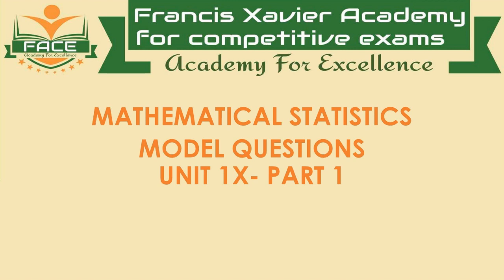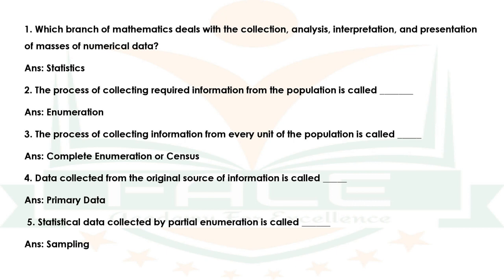Model questions: Question 1 — Which branch of mathematics deals with the collection, analysis, interpretation, and presentation of masses of numerical data? Answer: Statistics. Question 2 — The process of collecting required information from the population is called dash. Answer: Enumeration. Question 3 — The process of collecting information from every unit in the population is called dash. Answer: Complete enumeration or census.